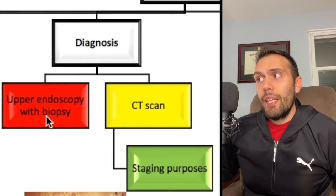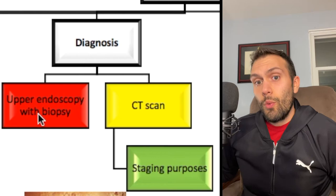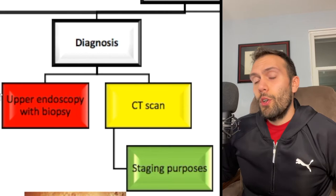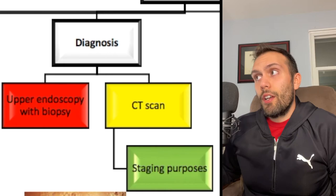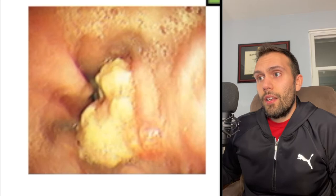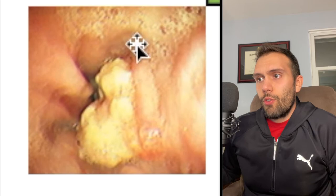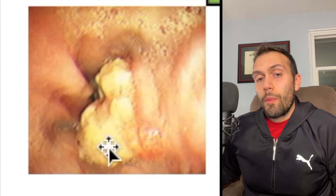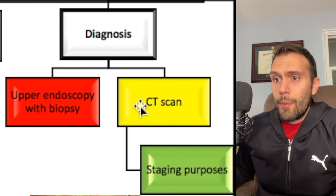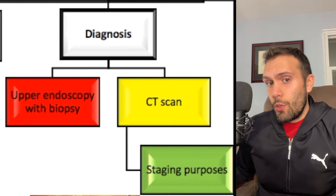For diagnosis: in a patient with dysphagia or red flag symptoms like unintentional weight loss and age greater than 50, the answer is upper endoscopy and biopsy. It allows direct visualization — you can see an intraluminal mass and biopsy it. CT scanning of the chest and abdomen is done for staging purposes once a mass is found. This is particularly important for local regional disease: if a patient has a small two-centimeter mass without lymphadenopathy, staging via CT helps determine next steps.